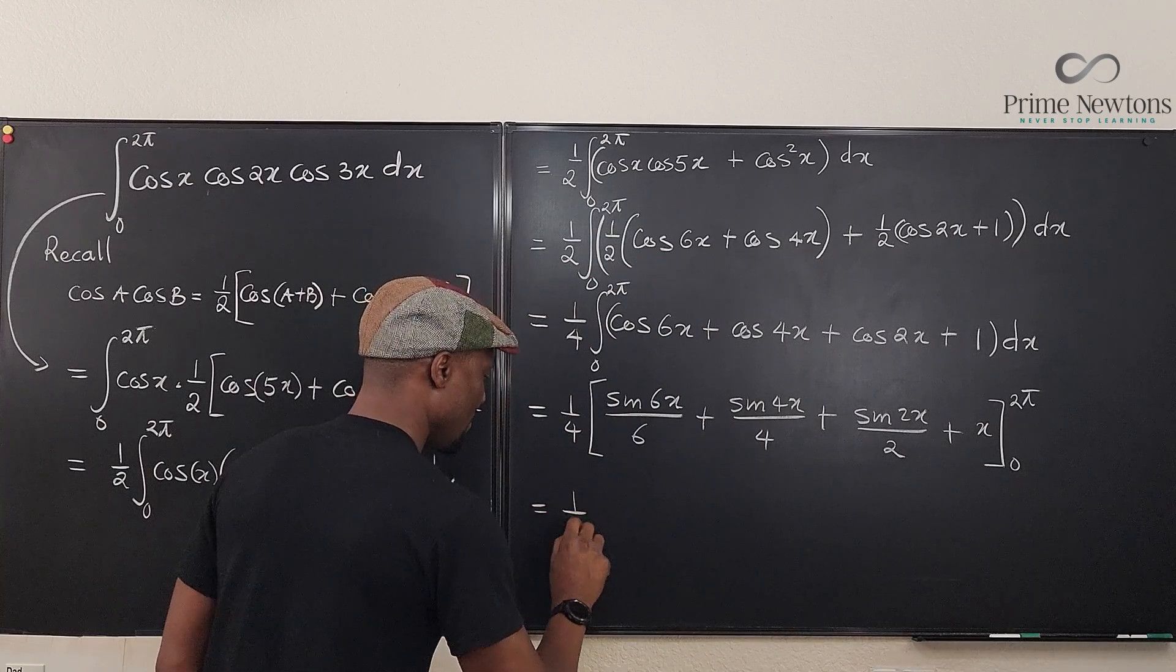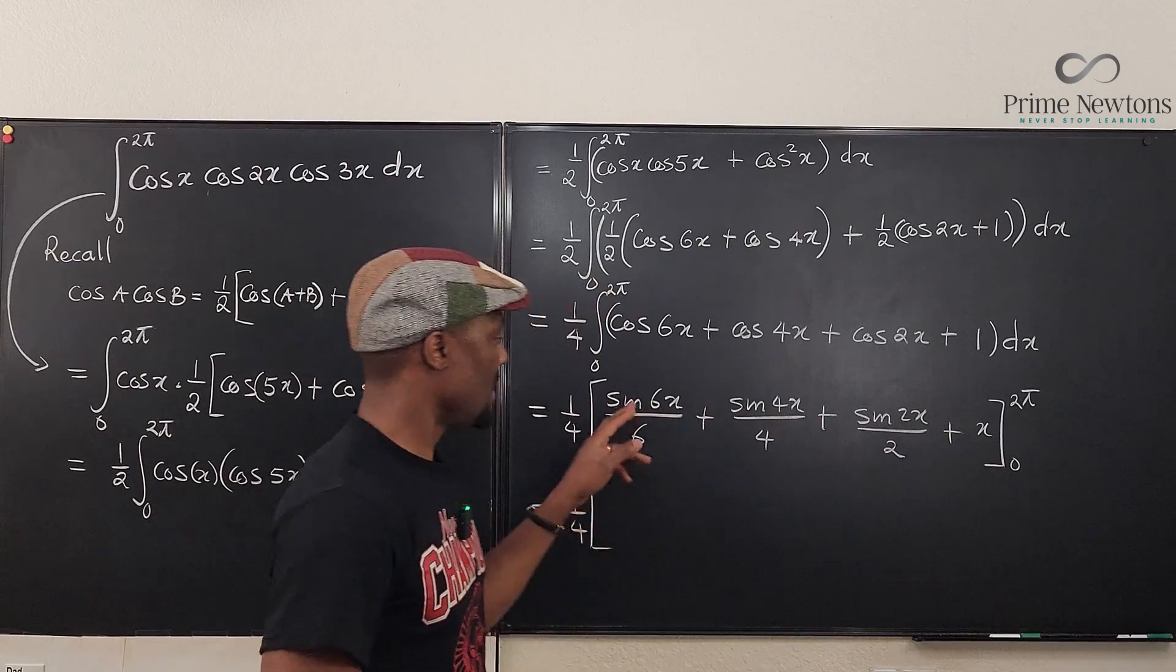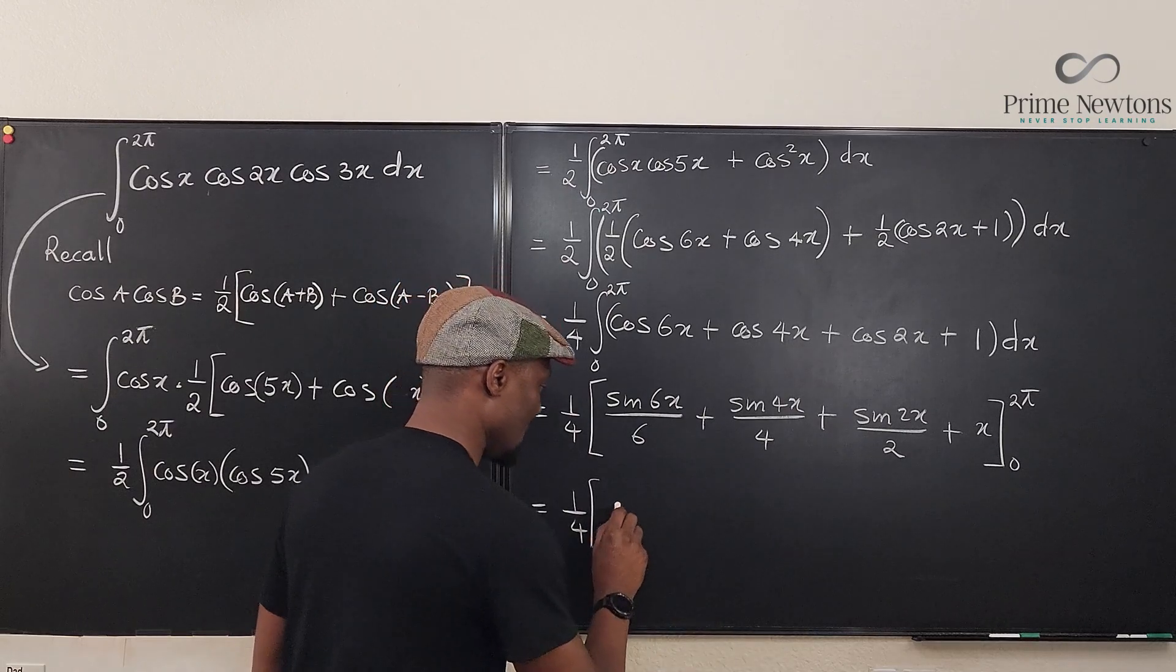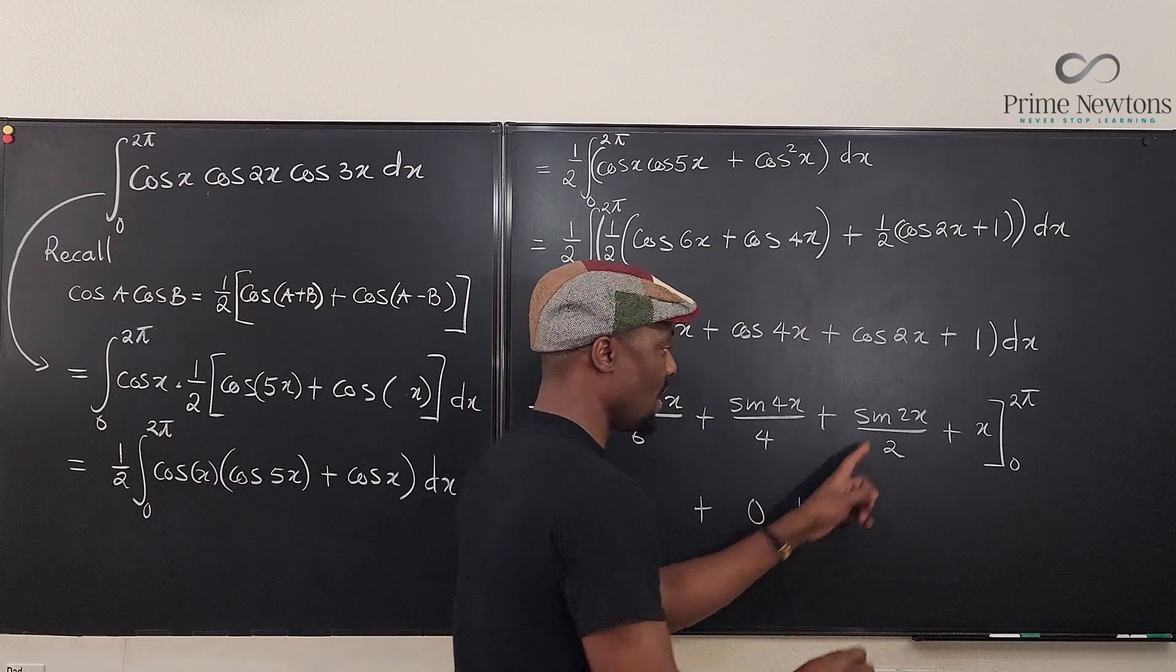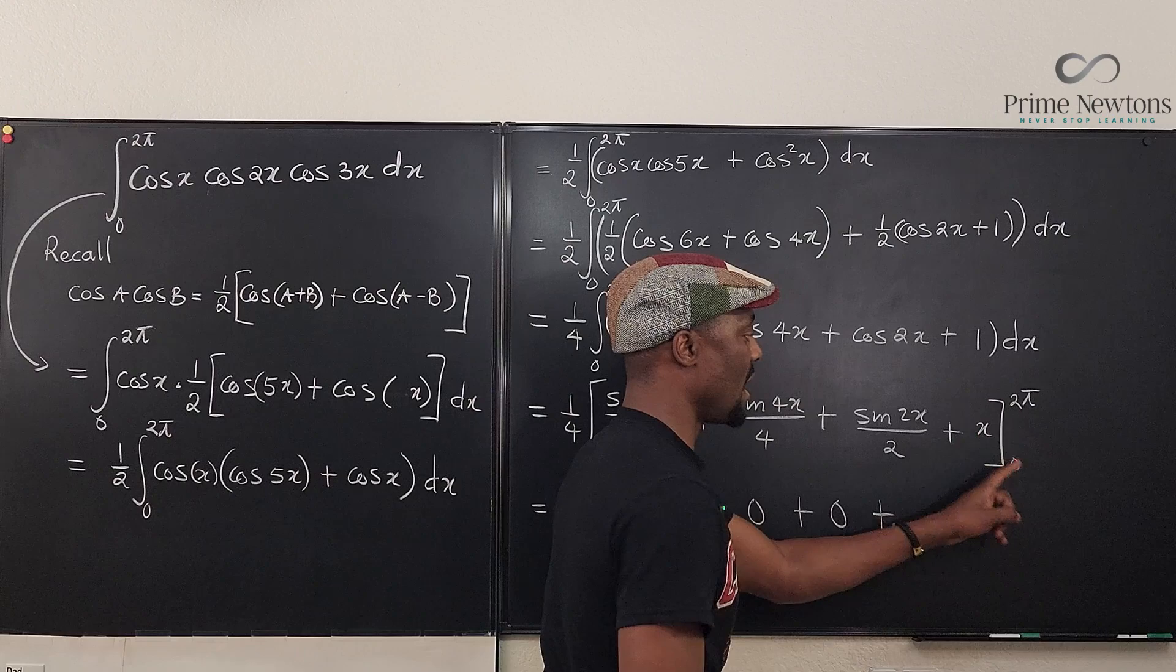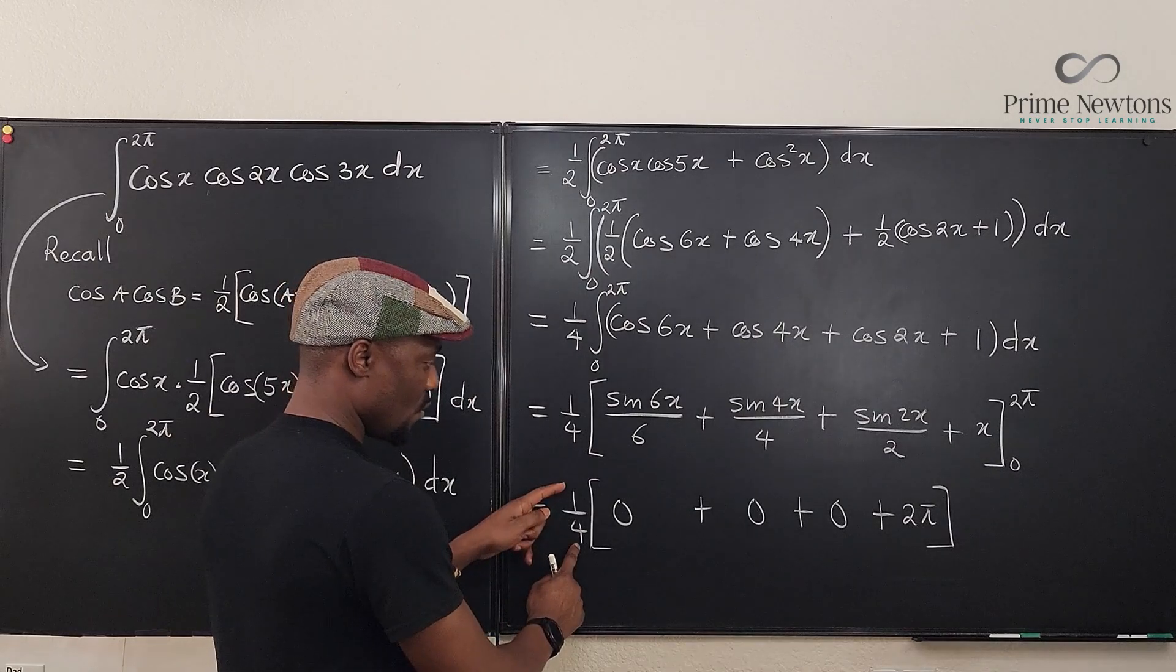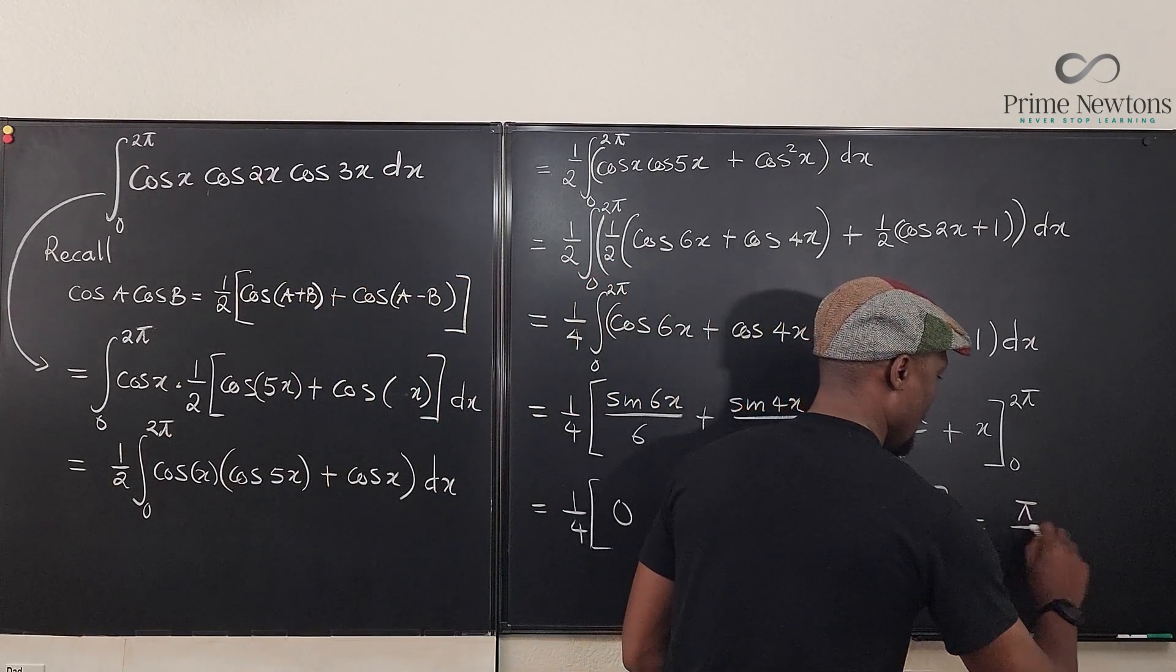This is 1 over 4 times. If I plug in 0 to this it's going to be 0 over 6. If I plug in 2 pi sine 12 pi is still 0. So this is 0. The similar thing happens here. It's 0. When I go here also it is 0. When I go here it is 2 pi minus 0. It's 2 pi.